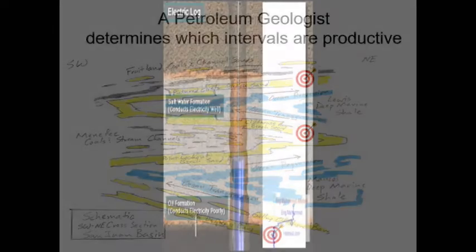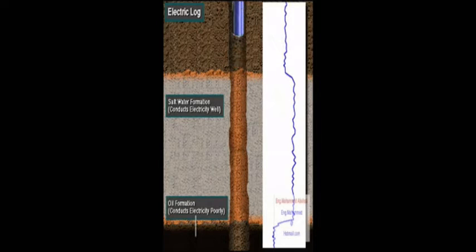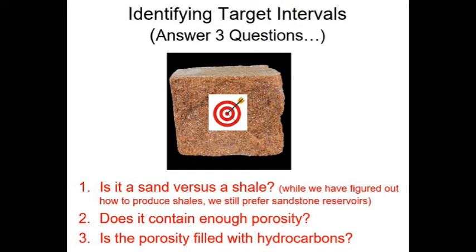To do that, electric tools called logs are lowered to the bottom of the hole and pulled back to the surface, measuring various properties of the rock. In particular, we are trying to determine three things about any particular interval.